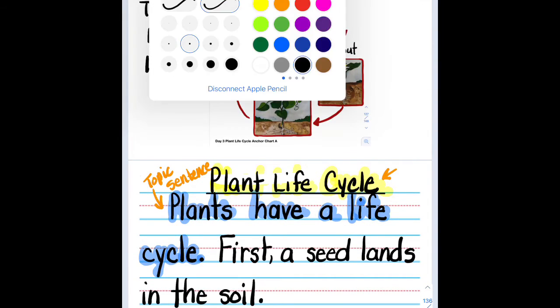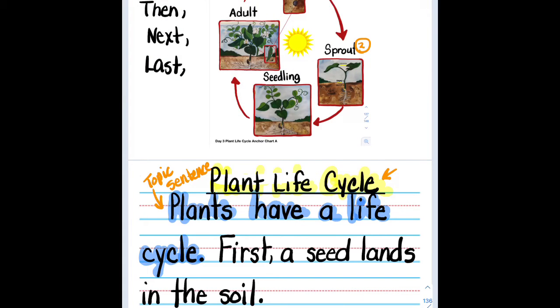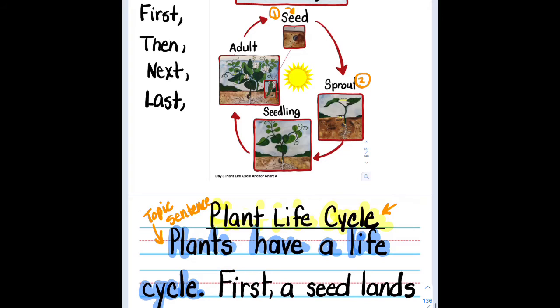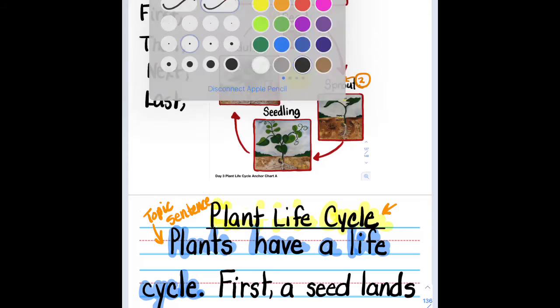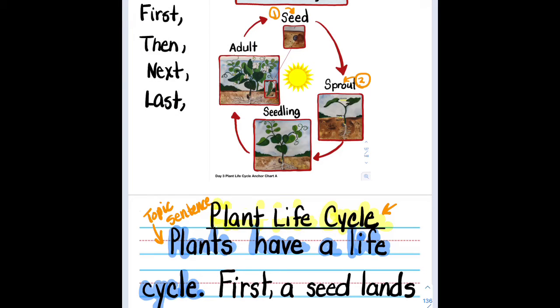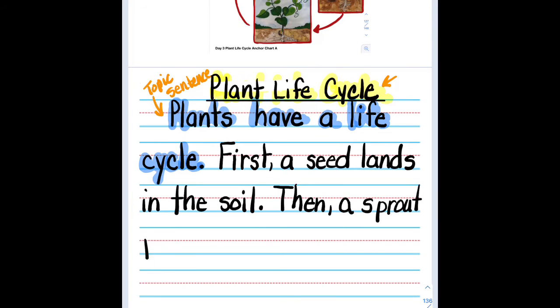So next what happens after that? Very good. The sprout. So now we need a sentence about the sprout. Oh, I heard that is a very good sentence. I'm going to write that. Then a sprout pops up.